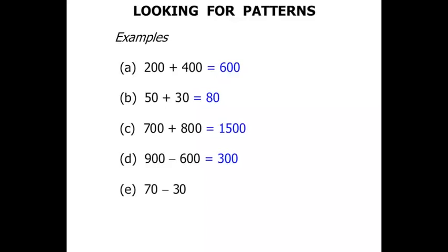70 minus 30. Well, 7 minus 3 is 4, and one zero only there.